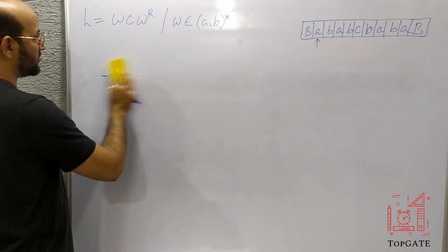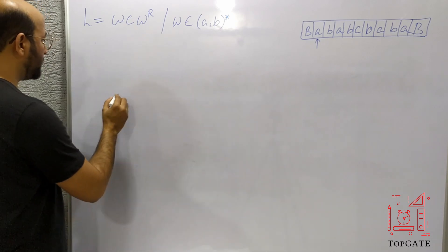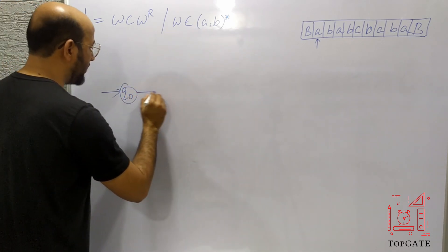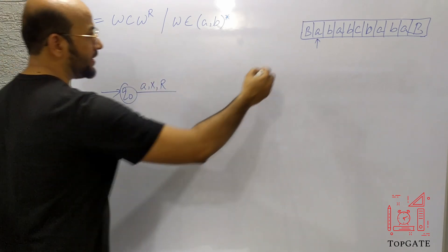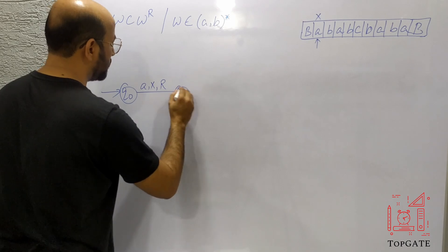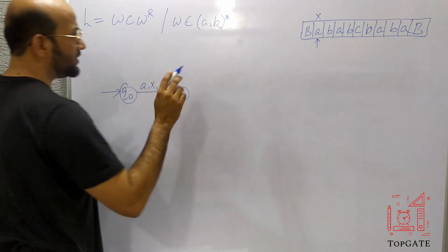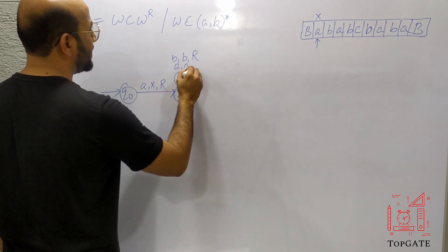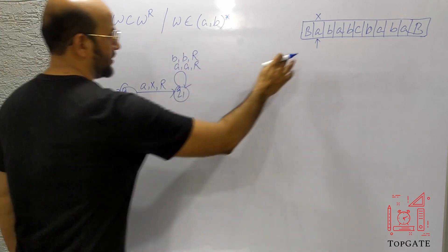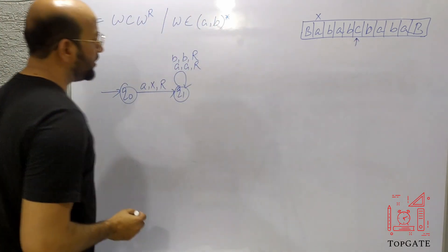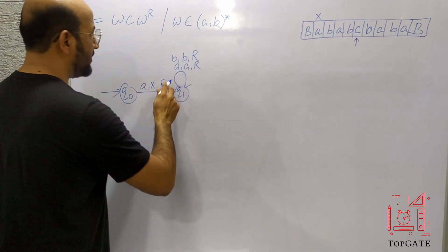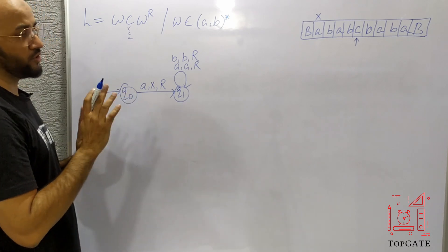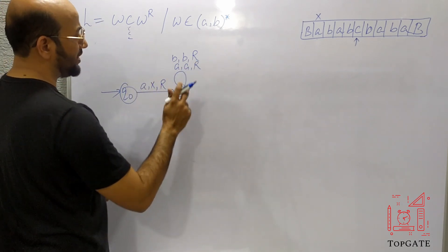The logic is: I will start with the first element, change A to X, then move forward skipping all A's, B's, and C's, until I find a blank. From the blank I take a left turn and change that last A to X as well. So both the first and last A's become X. Then I go back left to find this X, take a right turn, come to the next B, and the process repeats.